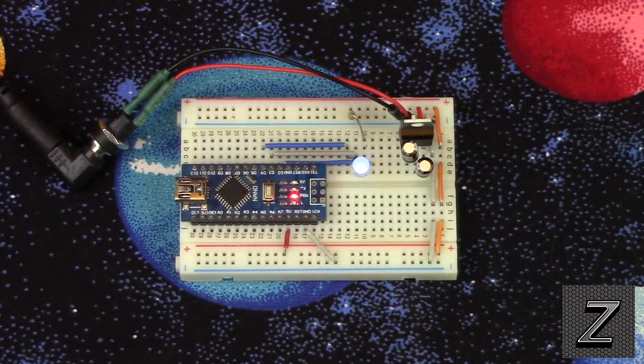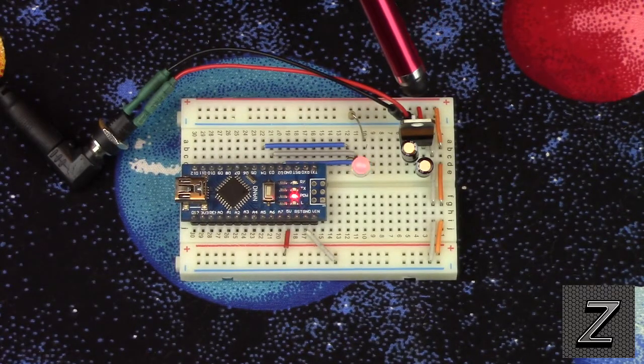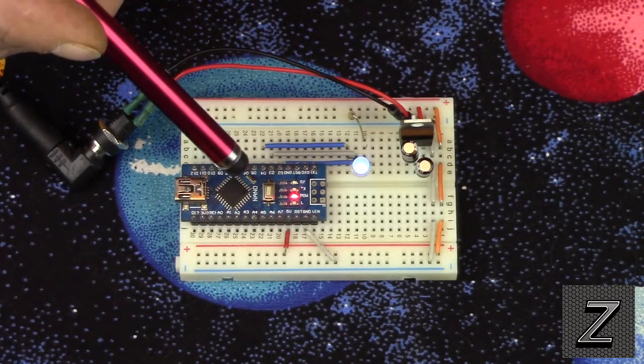Hello, and welcome to the Z-Hut. Today, I'd like to show you how you can use an L7805 5-volt voltage regulator to power an Arduino project.